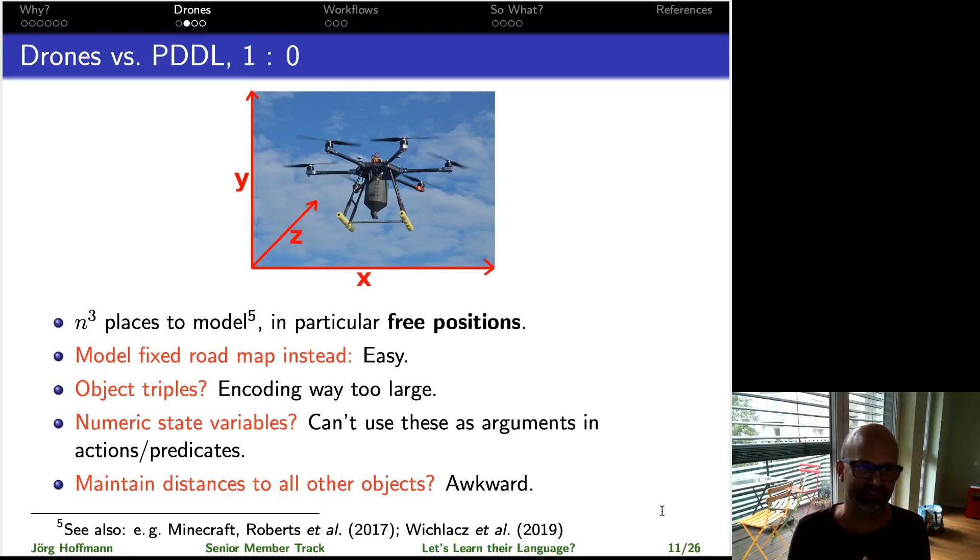I could use some numeric state variables for an arithmetic representation of space, but I cannot use numbers as arguments to predicates. So I cannot then say that some coordinate XYZ is currently being blocked or free. One could also think of a model where we actually maintain the distance to all other objects at any point in time, but awkward really is a lower bound for what that model would look like.